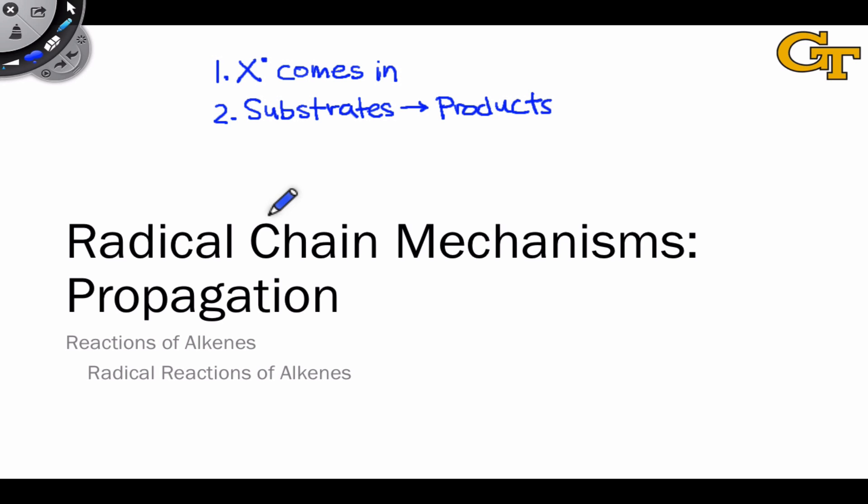At some point in one of the steps of this conversion — often the last step that generates the key product — the propagating radical is regenerated. This regeneration of x dot enables it to go on and carry forward the chain by colliding with a new pair of substrate molecules, so that eventually all of the substrates get converted to products.